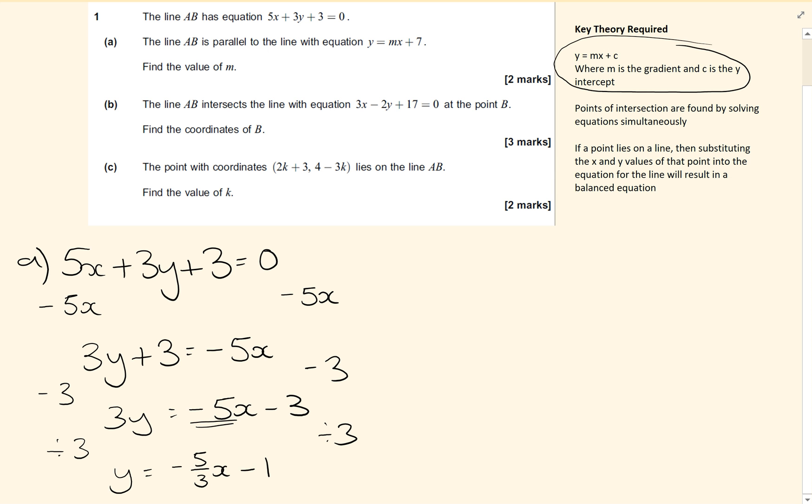So the gradient of this point, the value of m, is minus 5 thirds. So therefore m is minus 5 thirds.